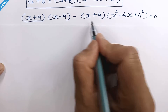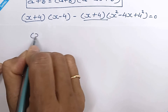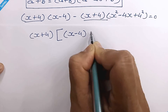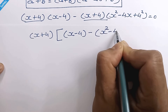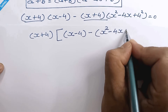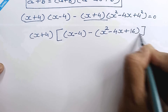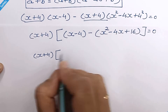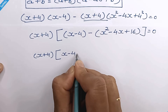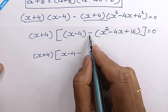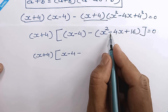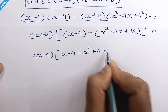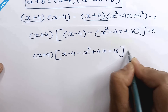Now we can factor out x plus 4. So x plus 4 times x minus 4 minus x squared minus 4x, and 4 squared is 16, so we put 16 here, is equal to 0. We will open these brackets, so it will be x minus 4 minus, and since we have a negative sign, when we open this bracket negative becomes positive and positive becomes negative. So it will be x squared plus 4x minus 16 is equal to 0.